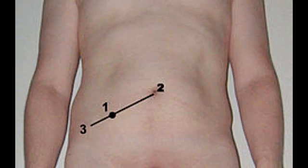What is McBurney's sign? McBurney's sign is also a sign used to diagnose appendicitis, and in this there will be severe right lower quadrant pain with rebound tenderness. McBurney's point is located two-thirds the distance from the umbilicus to the right anterior superior iliac spine.